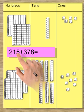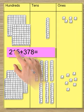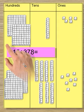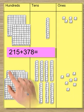A demonstration of the compensation strategy for three-digit plus three-digit addition, 215 plus 378.